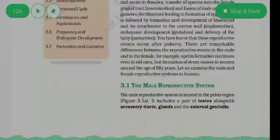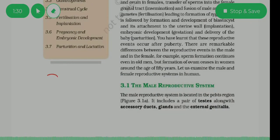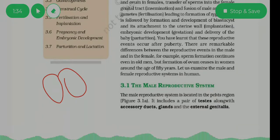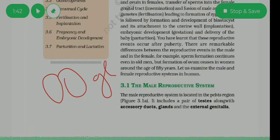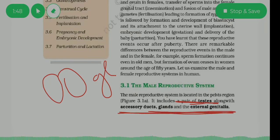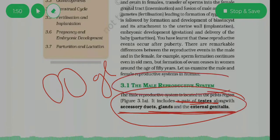So in the male reproductive system, there is a pair of testes — not one but two testes. Along with that we have some accessory glands, which also have their own functions, and there is also the external genitalia. So the main parts are: pair of testes, accessory ducts, glands, and external genitalia.